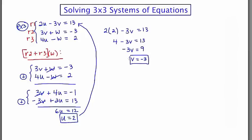I've got to find an equation that has a w in it because I haven't used that yet. So I'm going to use row 2. 3v plus w is equal to negative 3. Now in this case, v is negative 3. So we get negative 9 plus w is equal to negative 3. Adding 9 to both sides, w is equal to 6.